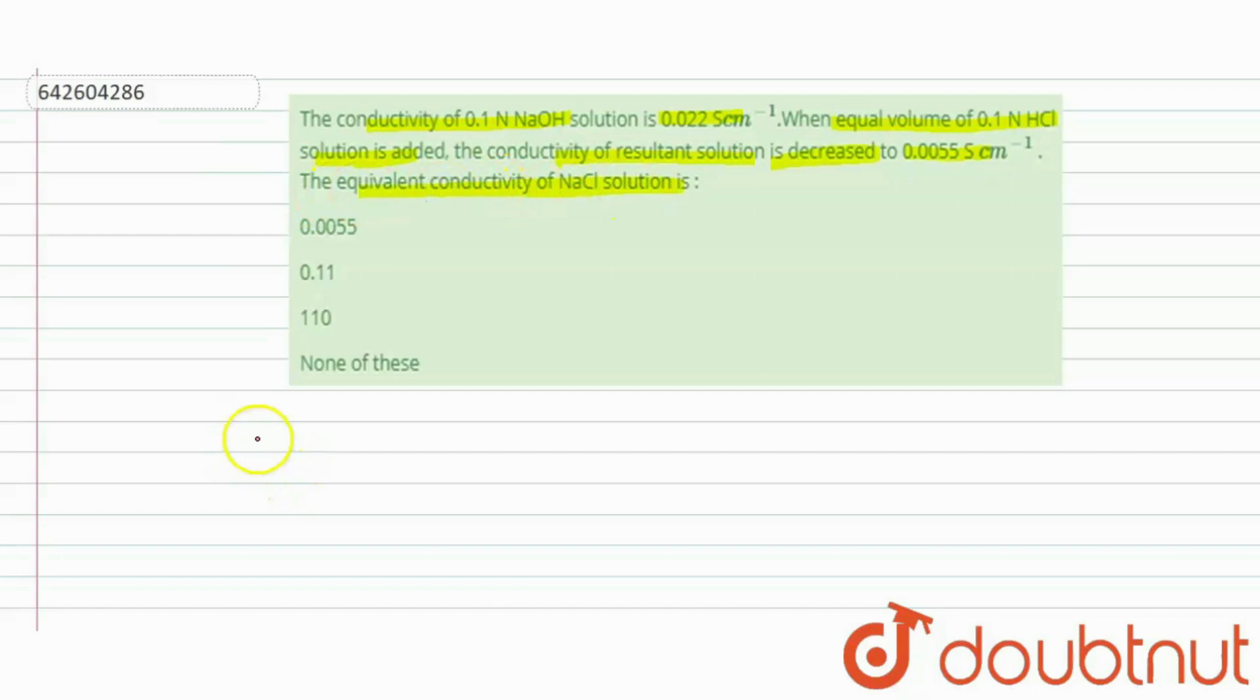Now, what is equivalent conductivity? Equivalent conductivity is equal to conductivity times 1000 upon normality. And in the question, we have the value of conductivity. So if we find out the normality, then we can calculate the equivalent conductivity.